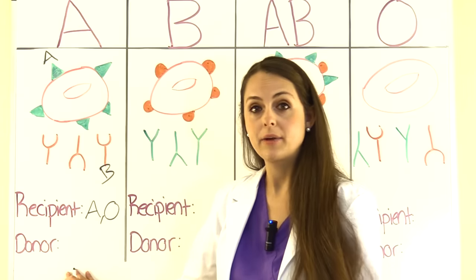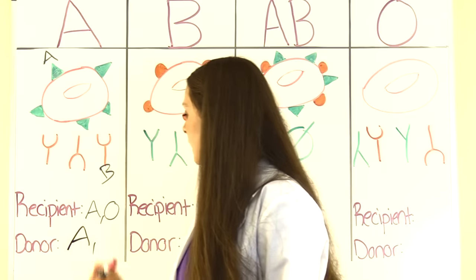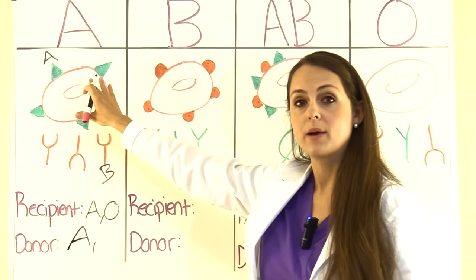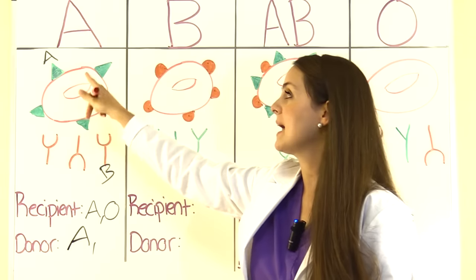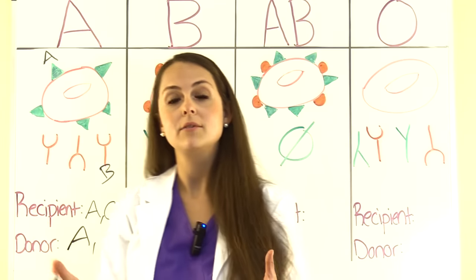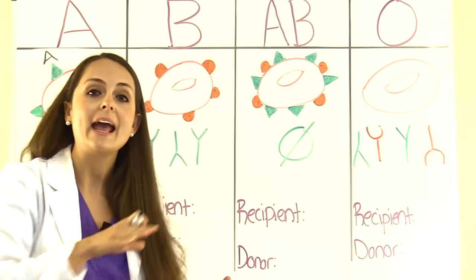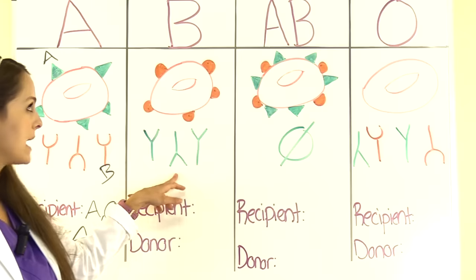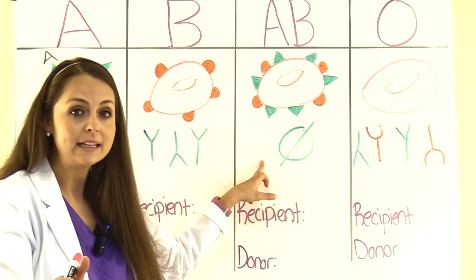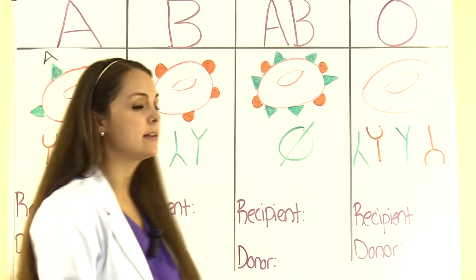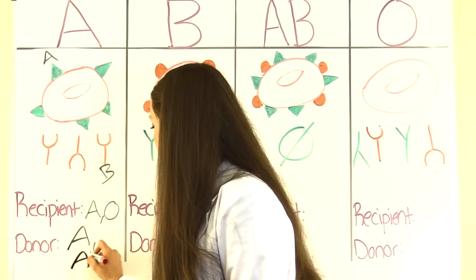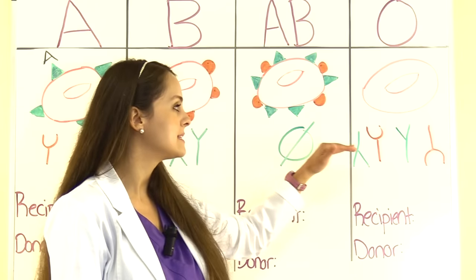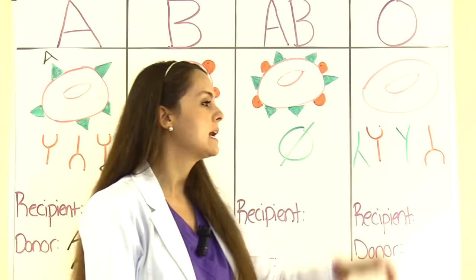As a donor, type A can donate to other type A's. Since type A has A antigens, we can't give their blood to someone with A antibodies in their plasma. So B is out — they have A antibodies. AB is a candidate because they have no antibodies in their plasma. O is out because they have both A and B antibodies. So type A can donate to A and AB.